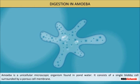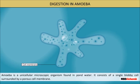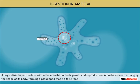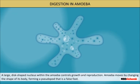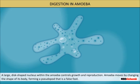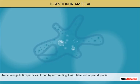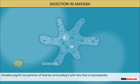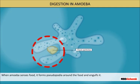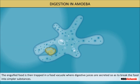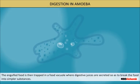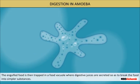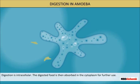Amoeba is a unicellular microscopic organism found in pond water. It consists of a single blobby cell surrounded by a porous cell membrane. A large disc-shaped nucleus within the amoeba controls growth and reproduction. Amoeba moves by changing the shape of its body, forming pseudopods, that is, false feet. Amoeba engulfs tiny particles of food by surrounding them with pseudopodia. When amoeba senses food, it forms pseudopodia around the food and engulfs it. The engulfed food is then trapped in the food vacuole, where digestive juice is secreted to break the food into simpler substances. Digestion is intracellular, and the digested food is then absorbed into the cytoplasm for further use.